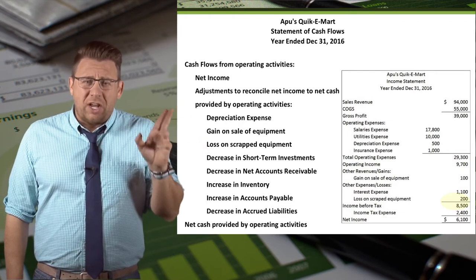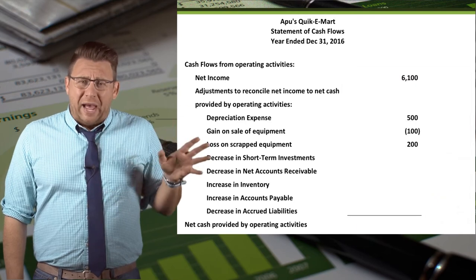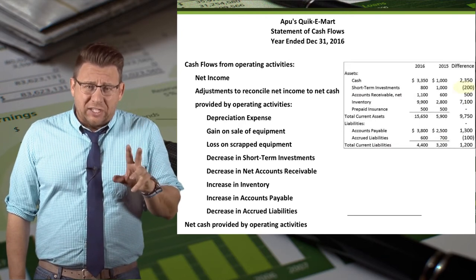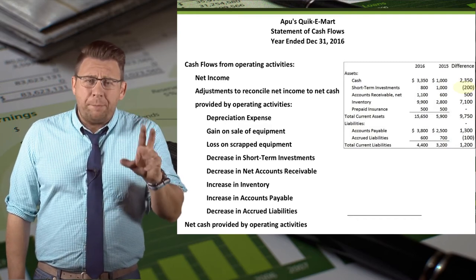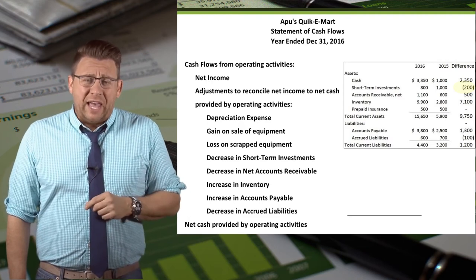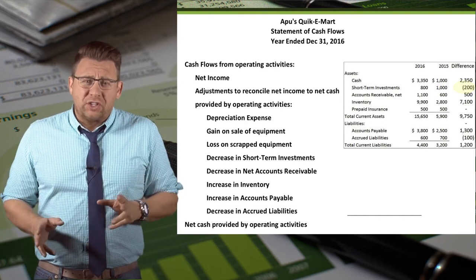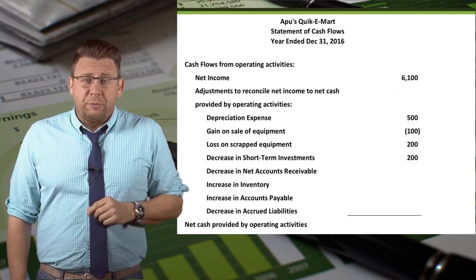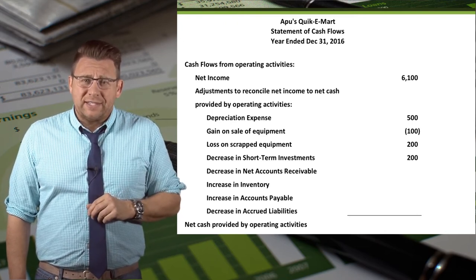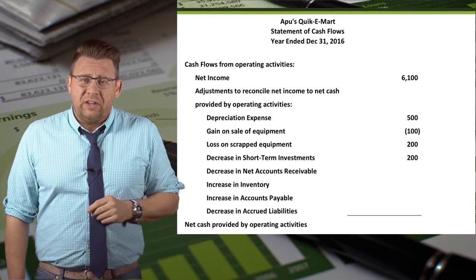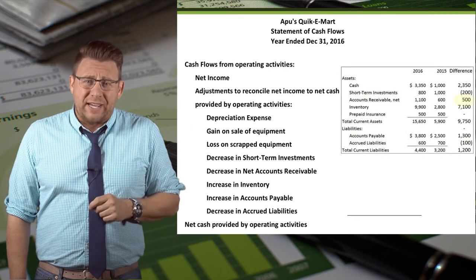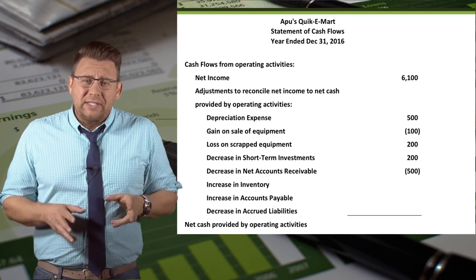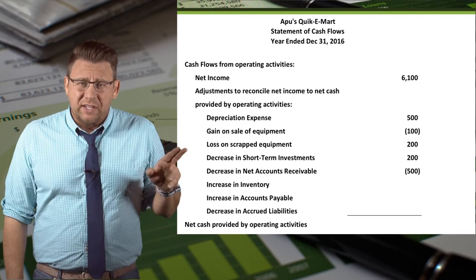We also have a loss. Since losses are deductions in net income, we add back $200 to cancel out the effect of the loss. Next, we look at changes in non-cash current assets and liabilities. We skip the cash account because the change in cash is what the statement of cash flows explains. Short-term investments decreased by $200, so we add back $200 for the decrease in current assets. Accounts receivable increased $500, so we deduct $500 for the increase in current assets.